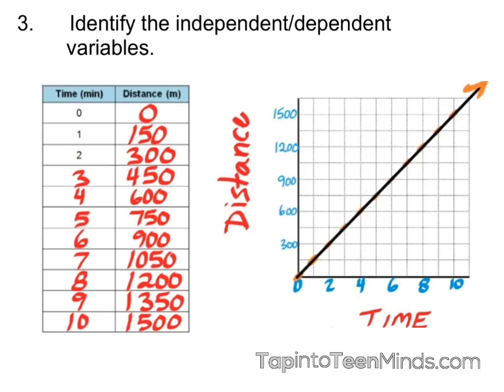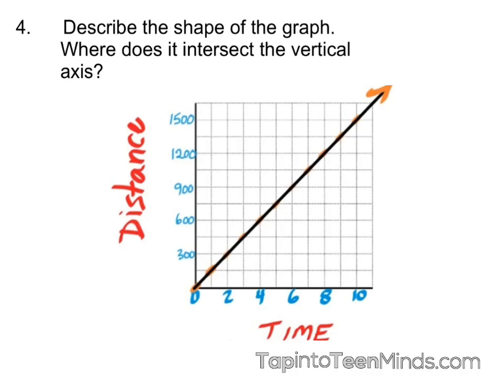When identifying the independent and dependent variables, we've already mentioned previously that time is the independent, distance is the dependent. That is because time is independent of the distance. The distance does not affect the time. Time will go on on its own regardless of the distance of the runner. However, because the runner is going at a constant rate, time does dictate how far that runner will be. So I know after a certain period of time that runner will be at a certain distance.